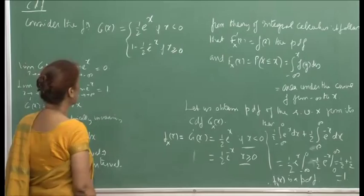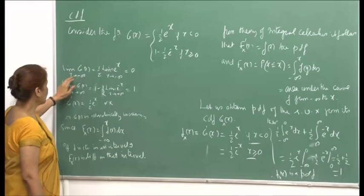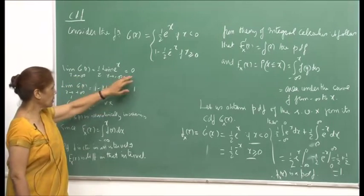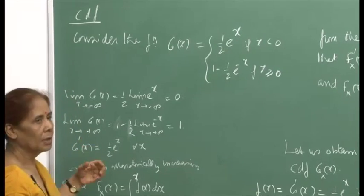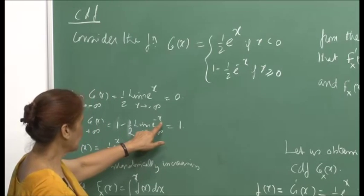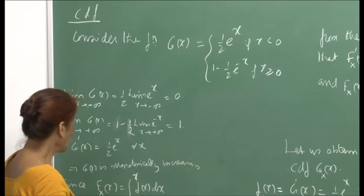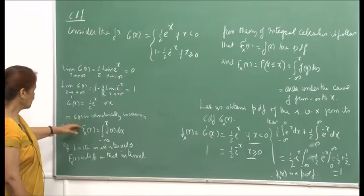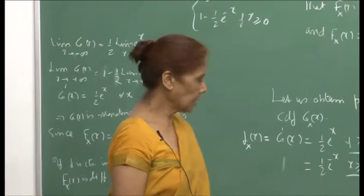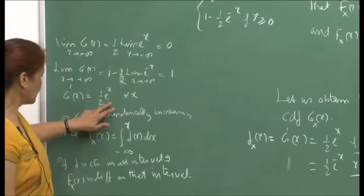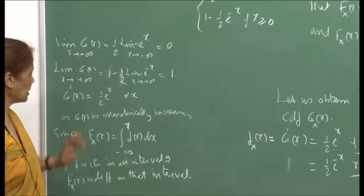Consider the function g(x) defined as follows: for x less than 0 it equals (1/2)e^x, and for x non-negative it equals 1 − (1/2)e^(−x). We want to verify this is a valid CDF. First, the limit as x goes to minus infinity tends to 0, since e^x → 0. The limit as x → +∞ tends to 1, since e^(−x) → 0. For monotonic increase, we take the derivative: g′(x) = (1/2)e^x for x < 0, which is non-negative, confirming g(x) is monotonically increasing.